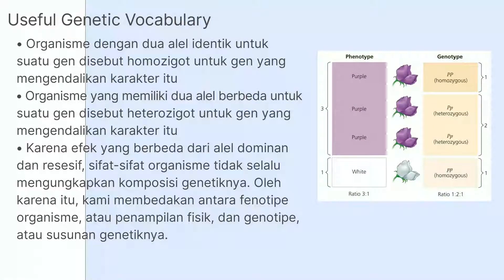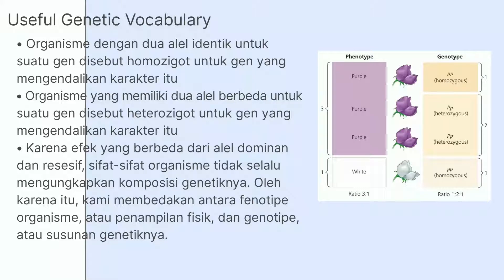Kosa kata genetik yang berguna: Pertama, organisme dengan dua alel identik untuk suatu gen disebut homozigot. Kedua, organisme yang memiliki dua alel berbeda disebut heterozigot; tidak seperti homozigot, heterozigot tidak berkembang biak dengan benar. Ketiga, karena efek berbeda dari alel dominan dan resesif, sifat-sifat suatu organisme tidak selalu mengungkapkan komposisi genetiknya. Oleh karena itu kita membedakan antara fenotip atau penampilan fisik dengan genotip atau susunan genetika. Contohnya, tanaman PP dan Pp memiliki fenotip yang sama yaitu ungu tetapi genotip yang berbeda.